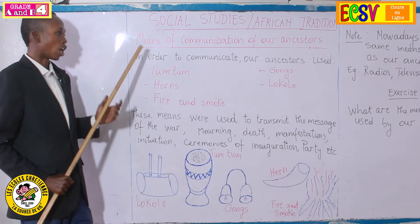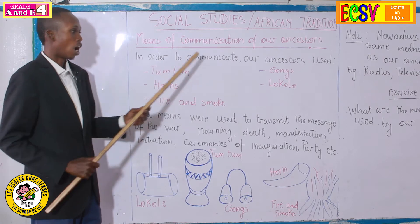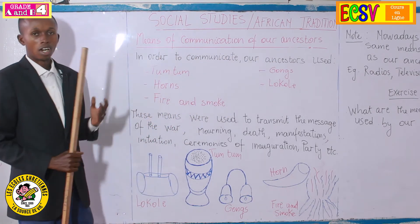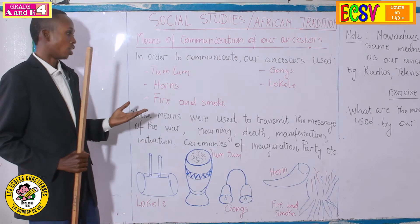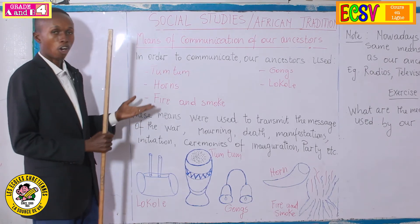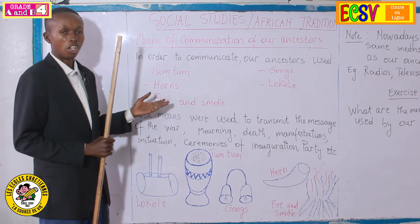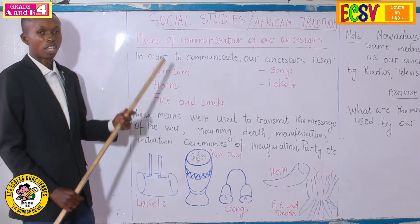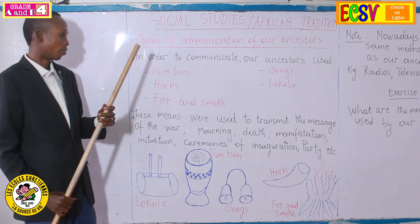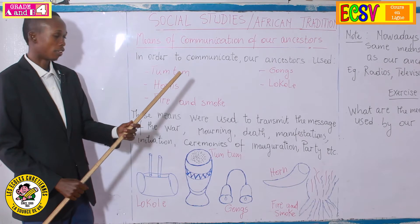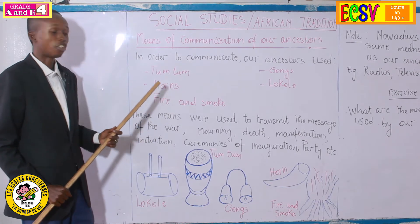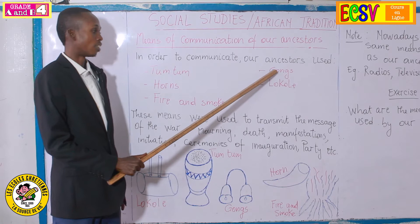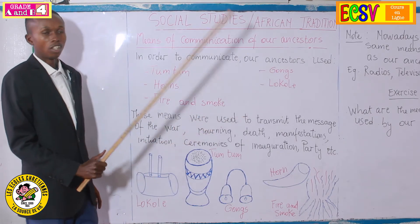In order to communicate, our ancestors used things such as — as you can see, examples written in red marker. Here we have tam-tam, horns, fire and smoke, guns, and locally.